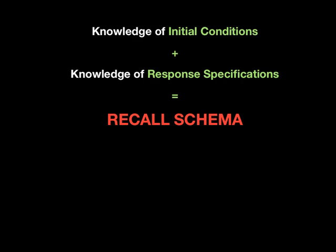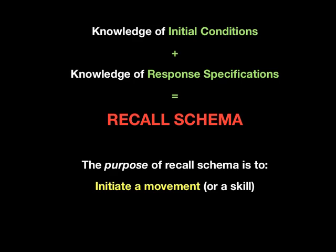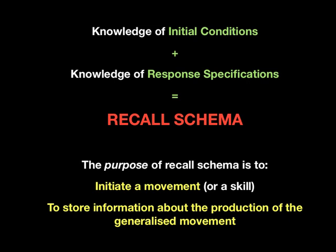The combination of knowledge of initial conditions — have I seen this situation before — plus the knowledge of response specifications — what do I do in this situation — equals recall schema. Those two memory items are recall schema: have we seen these things before and what do I have to do? They're recalled from the brain. The purpose of recall schema is to initiate a movement or skill, and to store information about the production of the generalised movement. As your movement happens, it stores information about it — for example, I dribbled this time, so I'll store that information for next time.